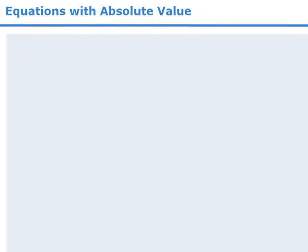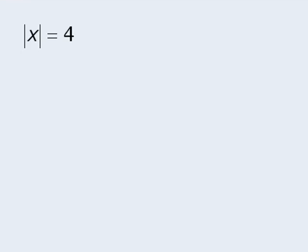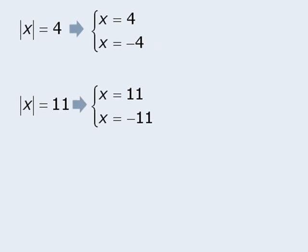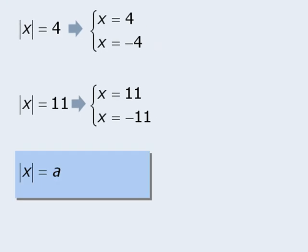Now let's make some observations about equations involving absolute values. For example, if the absolute value of x is equal to 4, then we know that x must equal either 4 or negative 4. Similarly, if the absolute value of x equals 11, then x can equal either 11 or negative 11. In general, if the absolute value of x equals a, where a is greater than or equal to zero, then x must equal either a or negative a.